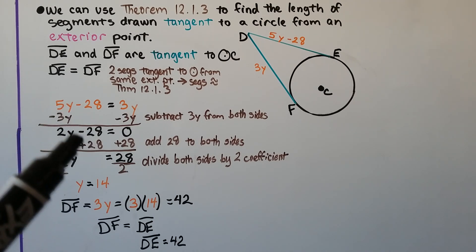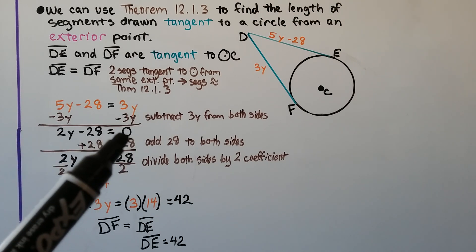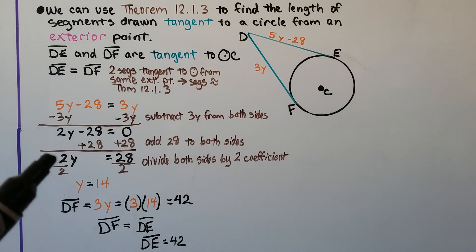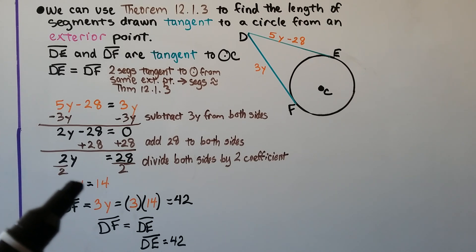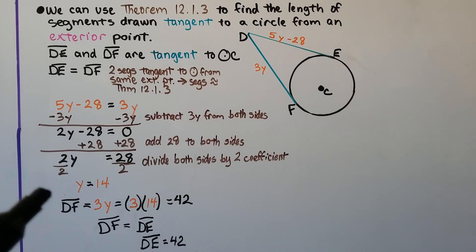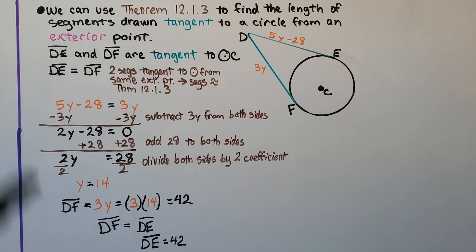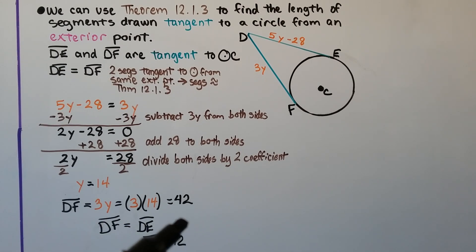We can subtract 3y from both sides and set the equation to equal 0, then add 28 to both sides, and get 2y equals 28. Divide both sides by this two coefficient, and we get y equals 14. If y equals 14, we can multiply it times 3 here, and get that DF is 42. And since DF is equal to segment DE, segment DE is equal to 42.